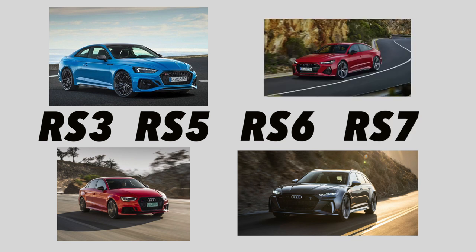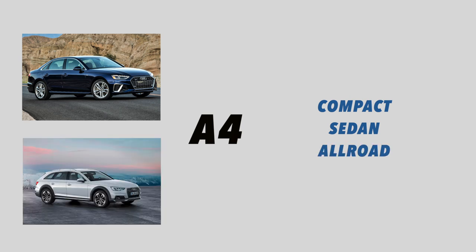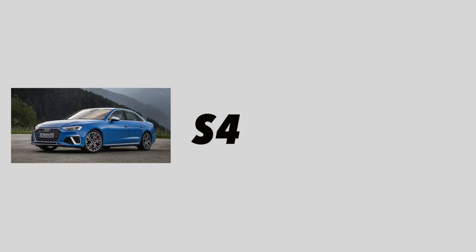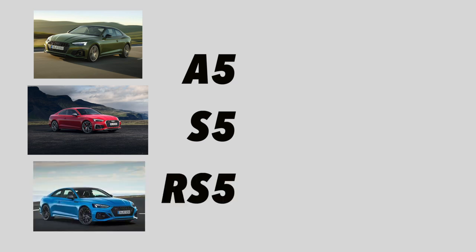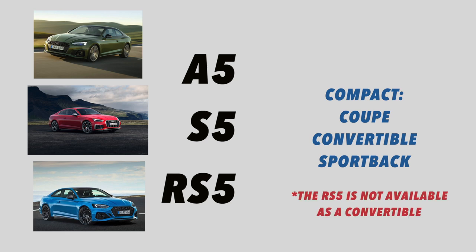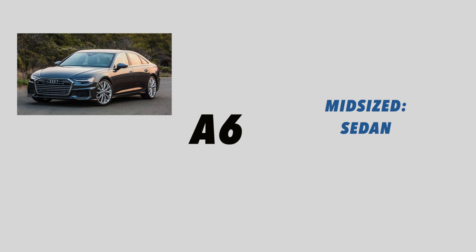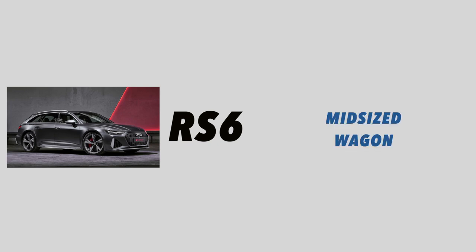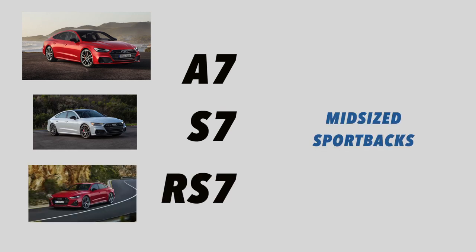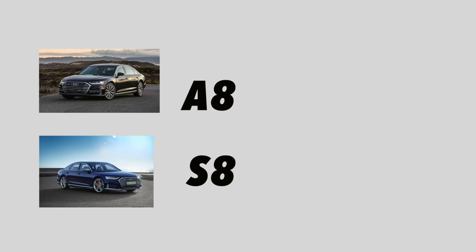Let's break down those models. Starting with the A3 — the A3, S3, and RS3 are subcompact sedans. The A4 is a compact vehicle offered in both sedan and all-road forms. All-road basically means a wagon that's lifted with plastic cladding — think of the Subaru Outback. The S4 is only offered as a compact sedan. The A5, S5, and RS5 are compact vehicles offered in coupe, convertible, and sportback forms. A sportback is essentially a sedan with a sloping rear roof and a hatchback instead of a trunk. The A6 is a midsize vehicle offered in both sedan and all-road form. The S6 is offered as a midsize sedan, while the RS6 is only offered as a midsize wagon — and Audi calls wagons avants. The A7, S7, and RS7 are midsize sportbacks. And last but not least, the A8 and the S8 are full-size sedans.